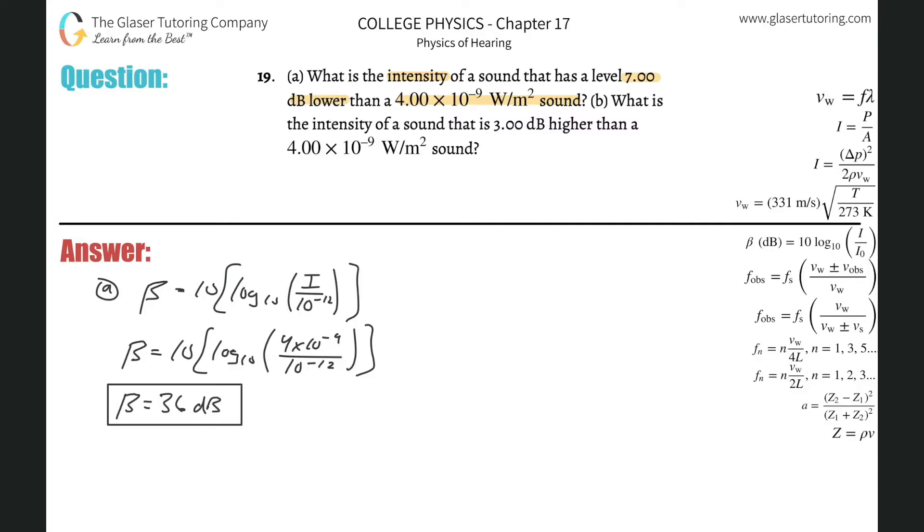Now, that's not the answer. It says we want to find the intensity of a sound that has a level seven decibels lower than that value. So if that's the decibel value, now I want to find the intensity when the sound is seven decibels less. So all I got to do is subtract seven decibels from this. We're left with a decibel value of 29 decibels.